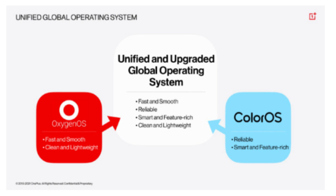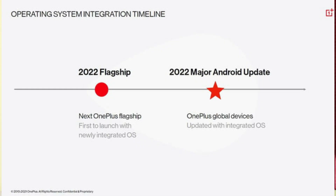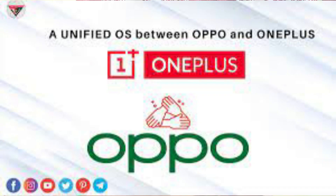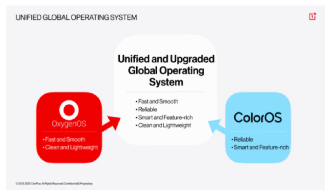The OnePlus Unified OS has been confirmed. In older mobiles, the Unified OS update has been confirmed. As you can see, OnePlus is popular because of OxygenOS. OxygenOS is now merged with Color OS — OxygenOS plus Color OS equals Unified OS.